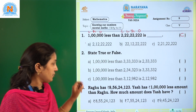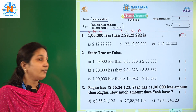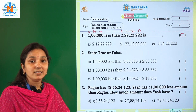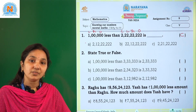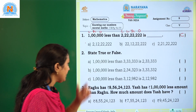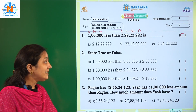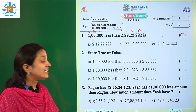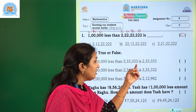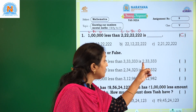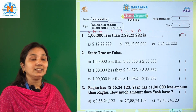Coming to the next one: state true or false. So here statements are given and we have to check whether they are true or false. The first statement is: 1 lakh less than 3 lakh 33,333 is 2 lakh 33,333.